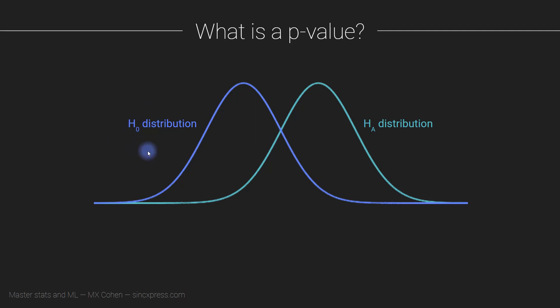From earlier videos on sampling variability, if we go out and measure a bunch of people and ask them to weigh themselves and report the answer, we're going to get slightly different answers if we ask a different group of people. There's going to be some natural variability — some people will gain weight, some will lose weight, and some won't change at all. That sampling variability is true regardless of whether the null hypothesis or the alternative hypothesis is true.